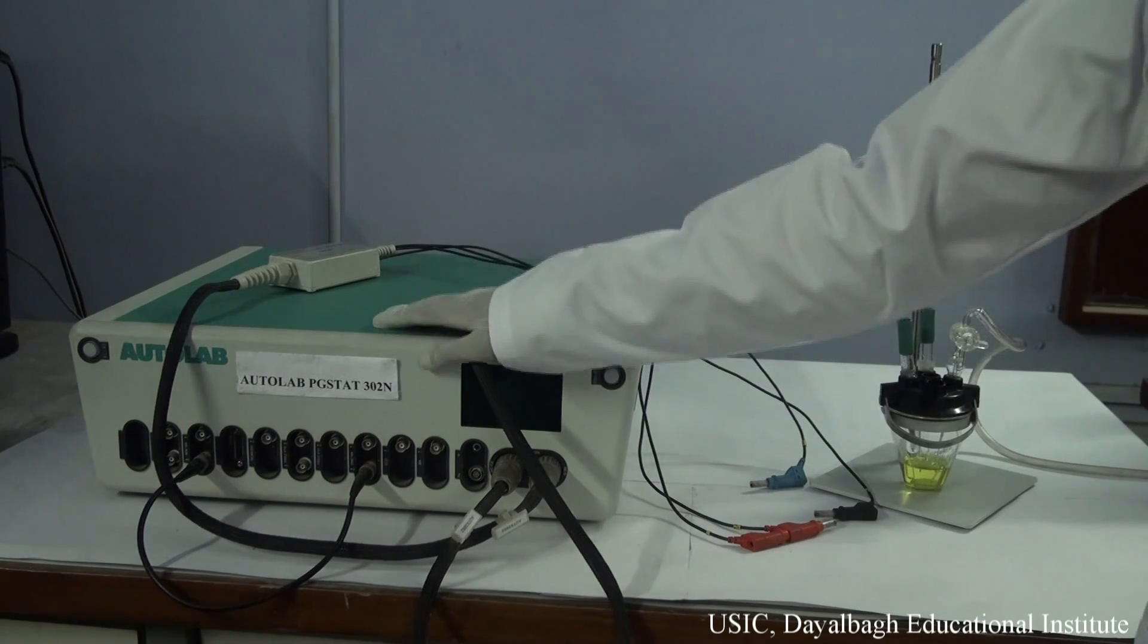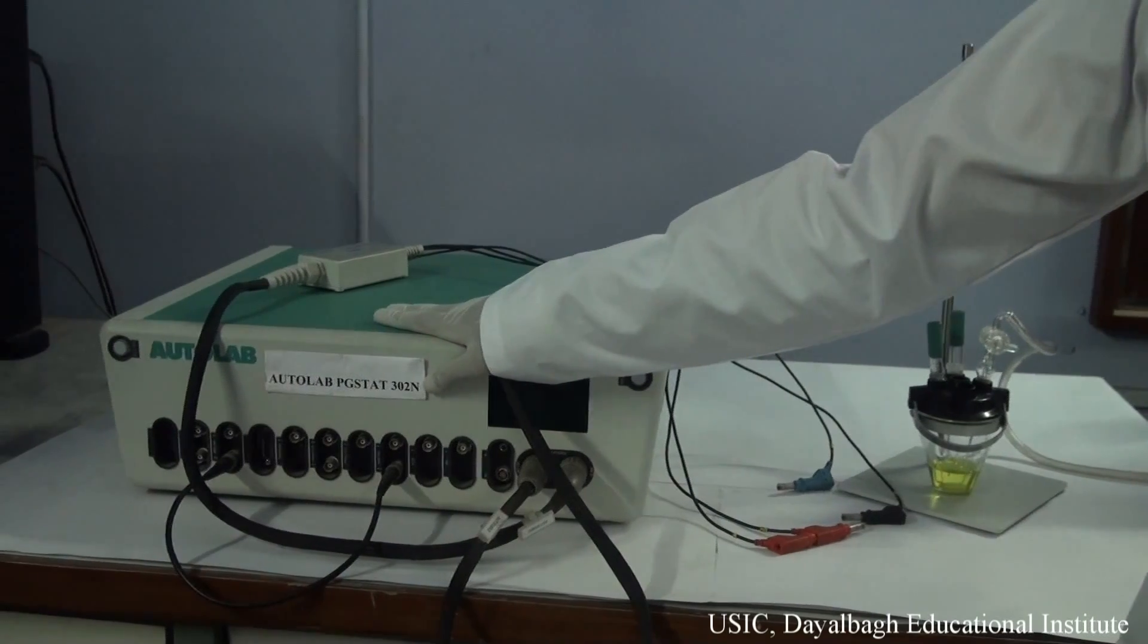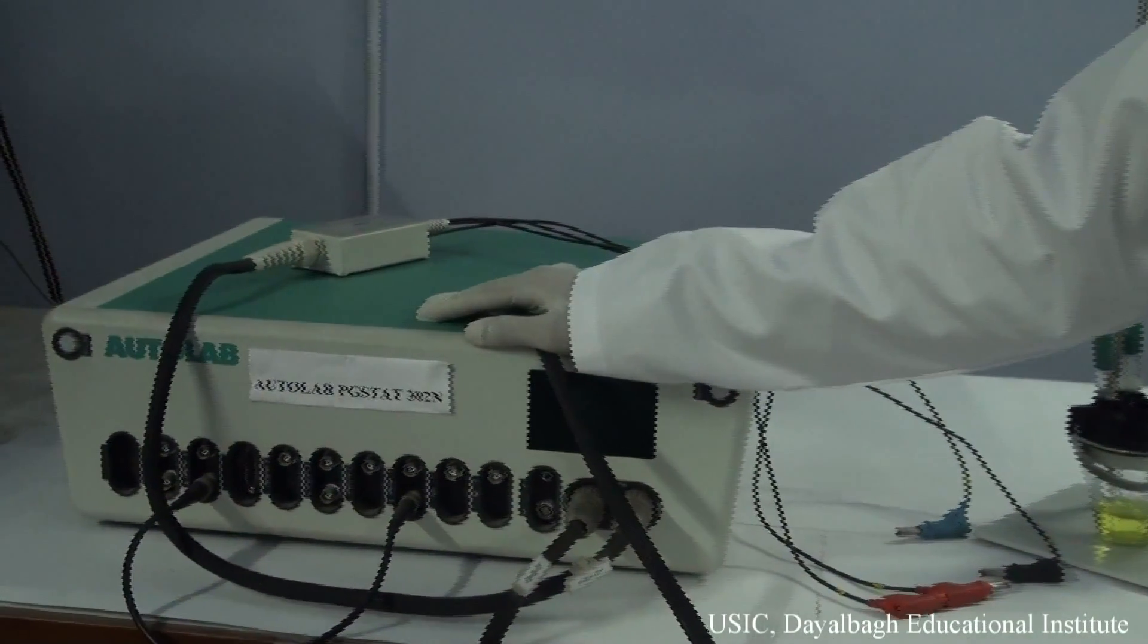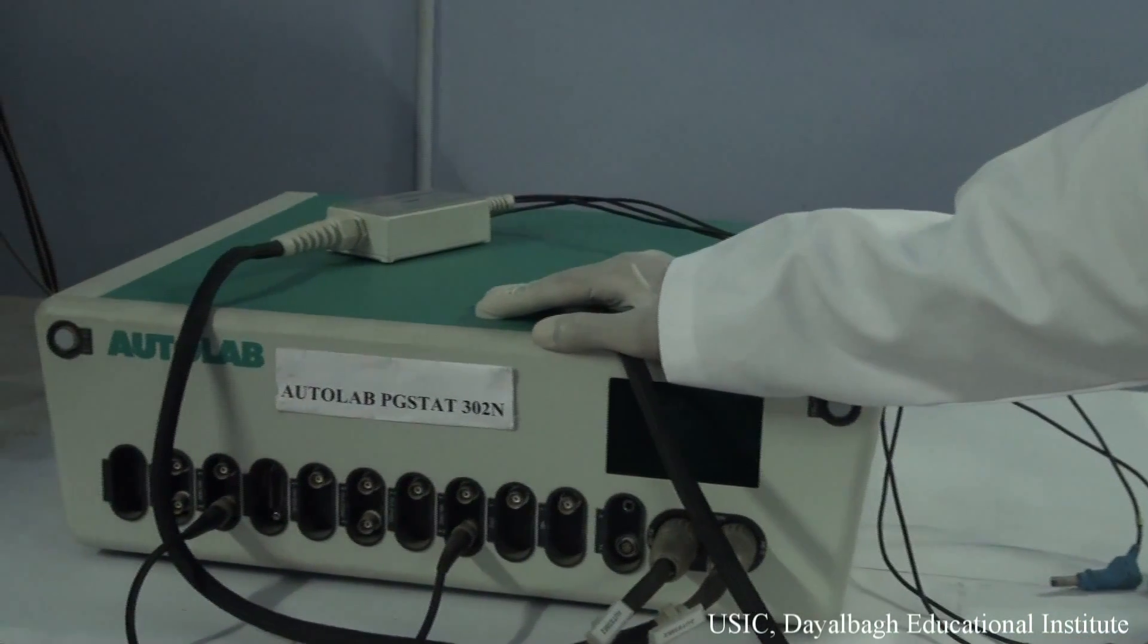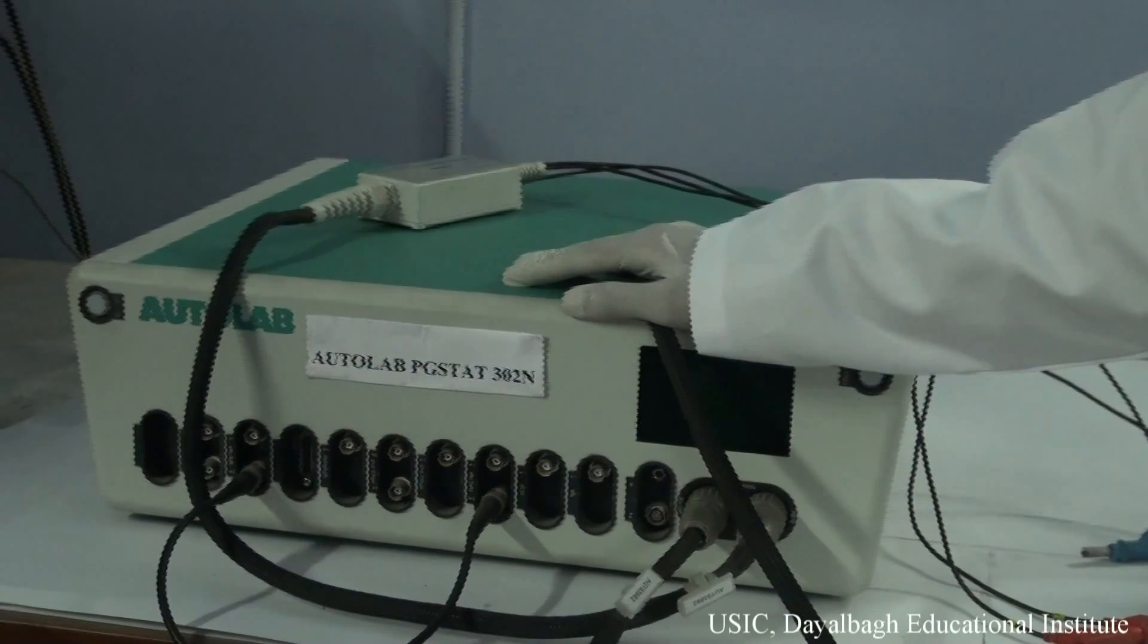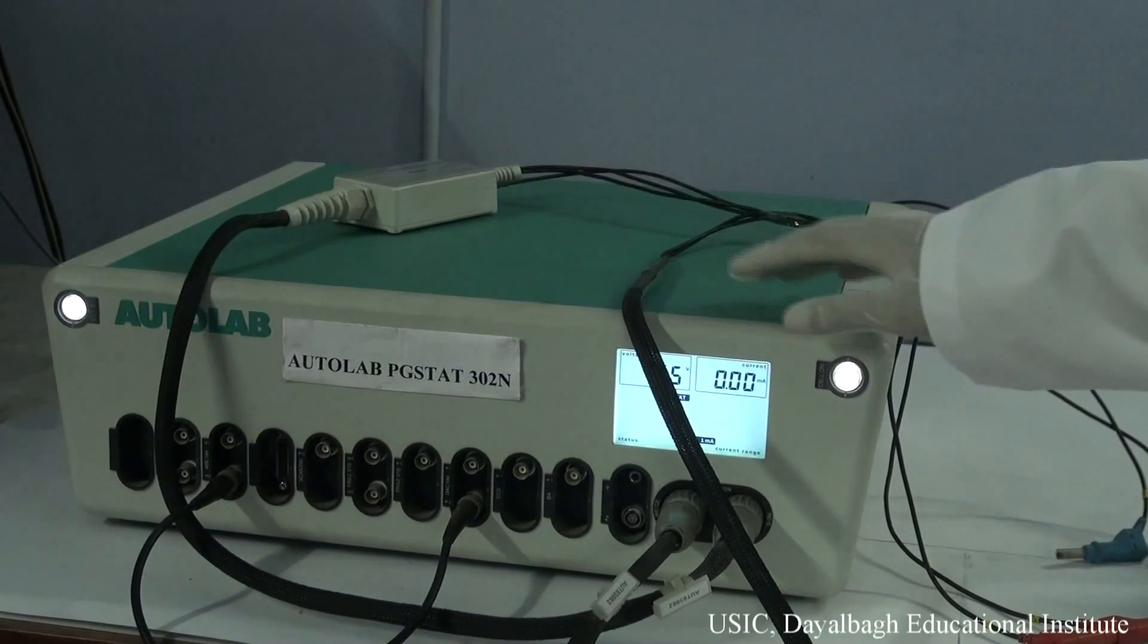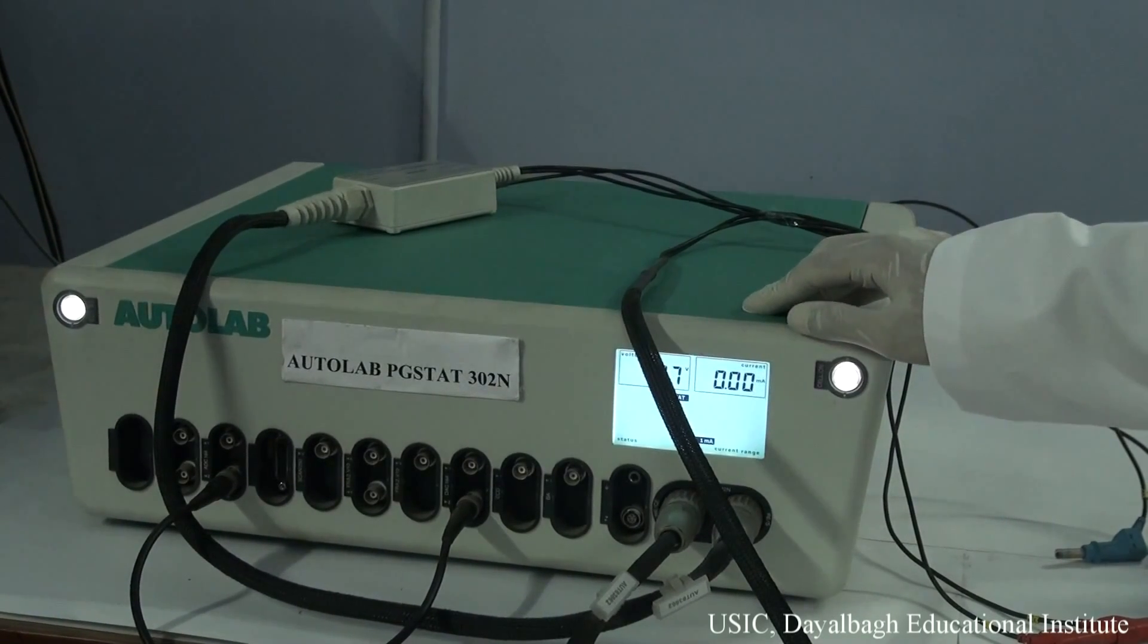Now this is the potential stat, Autolab PG-Stat 302N. It has sensitivity up to 10 to the power of -12 amperes. It can read up to picoamperes. Now we switch on the main of the Autolab.